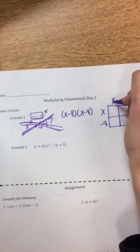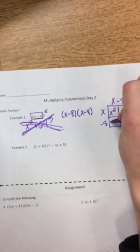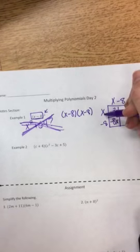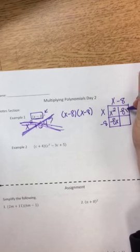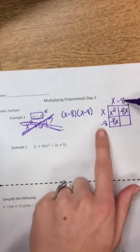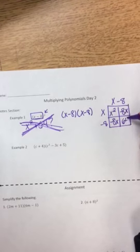And now once we do the box method, you can see what the correct answer should be. So, x times x is x squared. Negative 8 times x is negative 8x. x times negative 8 is still negative 8x. And then remember to fill in this last one, negative 8 times negative 8 would be a positive 64.